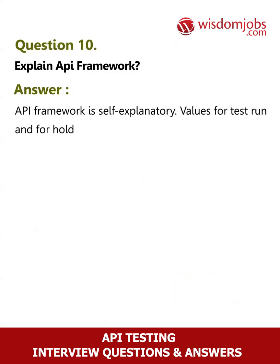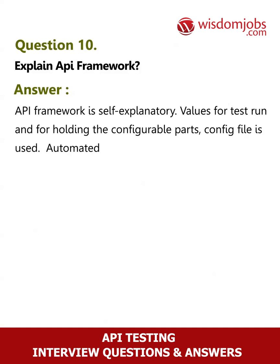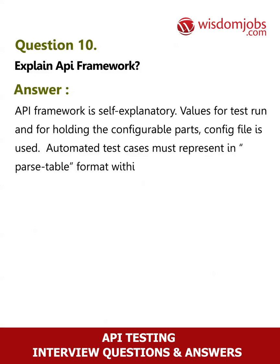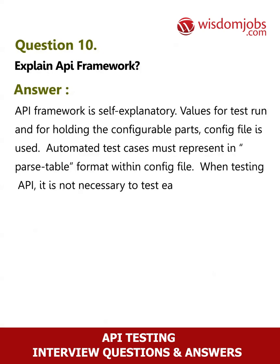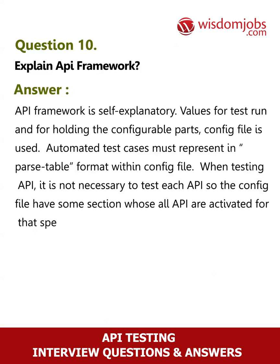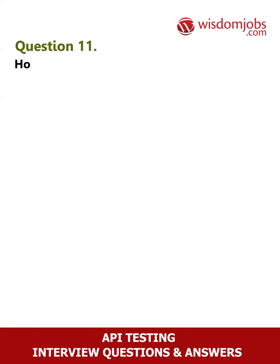Question 10: Explain the API framework. Answer: The API framework is self-explanatory. A config file is used for test run values and for holding the configurable paths. Automated test cases must be represented in a pass table format within the config file. When testing an API, it is not necessary to test each API, so the config file has sections where specific APIs are activated for that specific run.